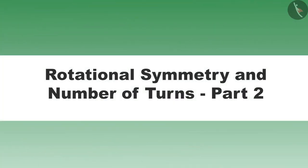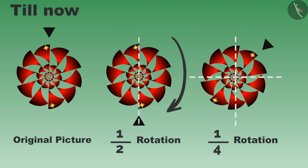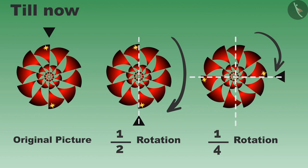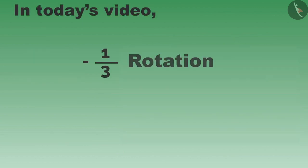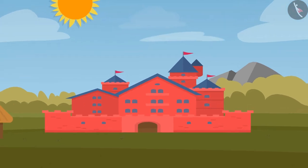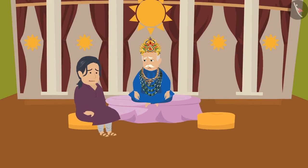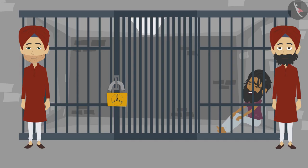Friends, welcome to this video. Till now you have learned about half rotation and one-fourth rotation. Today we will learn about one-third and one-sixth rotation. Strange incidents were occurring in King Krishnadevaraya's kingdom.